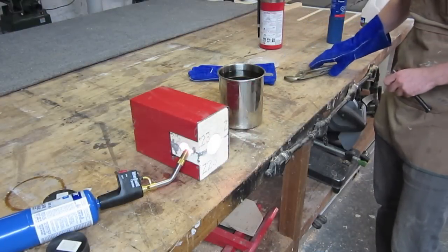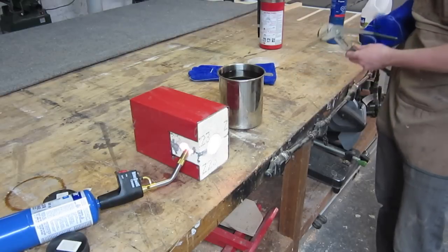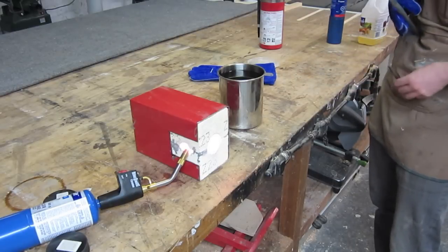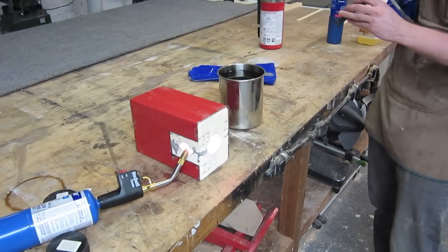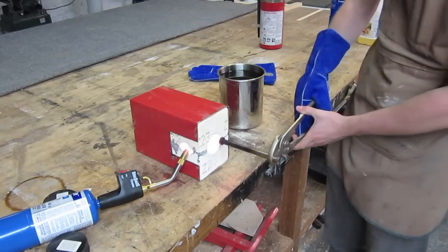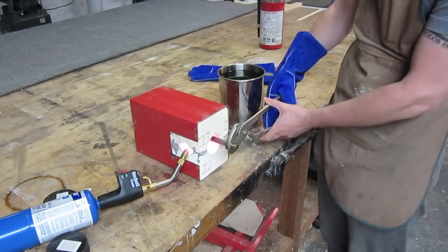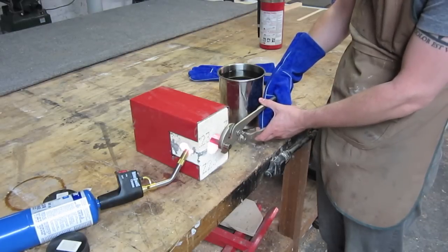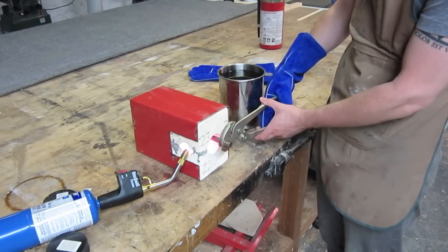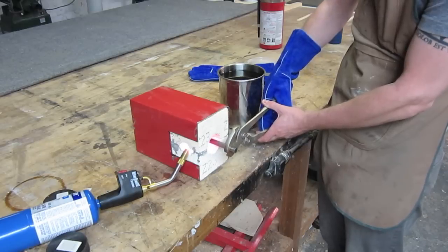After letting the forge heat up for several minutes, the next step is to preheat our quench oil. Warm quench oil will actually cool the steel faster because it forms less vapor bubbles around the blade during quench. To preheat the quench oil, I'm simply heating up a piece of scrap steel and then plunging it into the quench container.